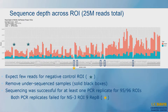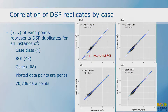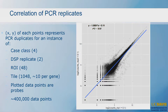This shows the sequence depth across samples. The blue stars indicate the control not on the tissue — as expected, there are very few tags in those regions. Out of the 96 ROIs we looked at, only one had both PCR replicates fail, giving us quite a good success rate. For reproducibility, the R-squared for serial section replicates was 0.98 at the gene level. For PCR replicates looking at the 1,048 probes, the R-squared was 0.97. We were really satisfied that the data we were getting was reproducible.